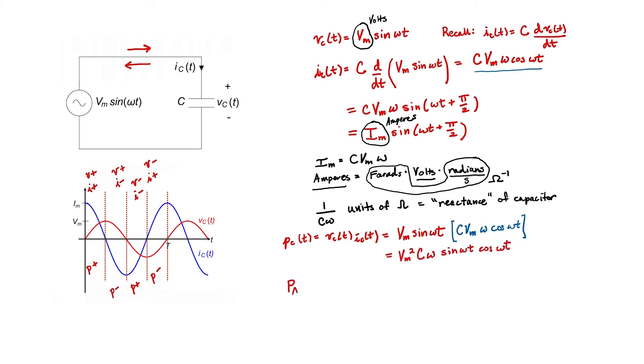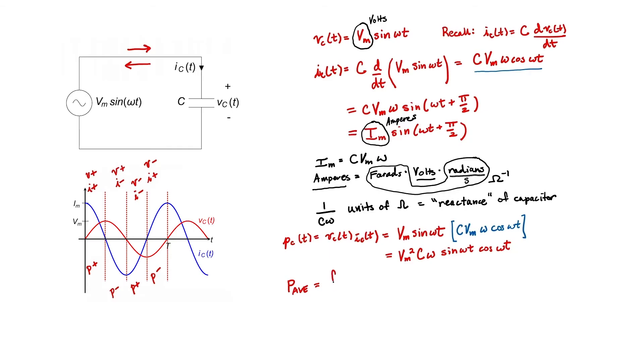Now that we have the instantaneous power, I'd like to find the average power. In other words, what flat line on this graph would give me the same power flow on average as the instantaneous power? Let's integrate over one period because beyond one period the signal is just periodic. This is the definition of average.